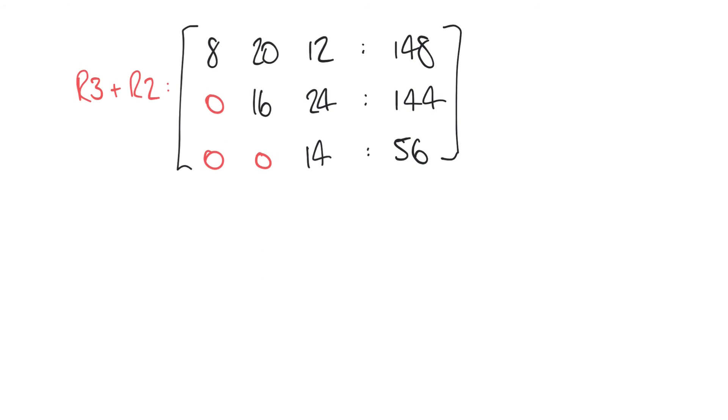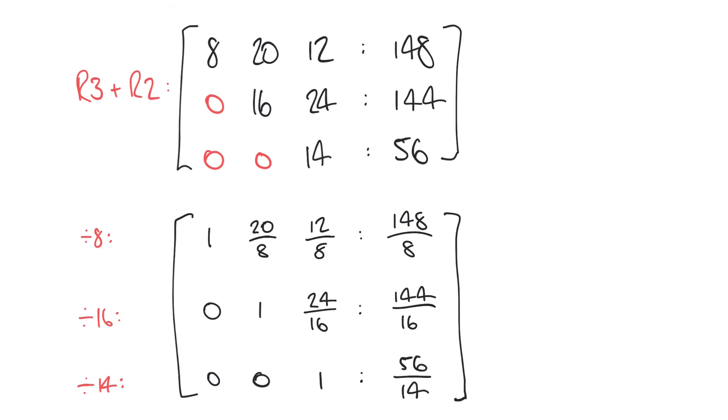And so what we get is something that looks like this. Everything now has been divided by numbers that mean that the diagonal terms are all 1.